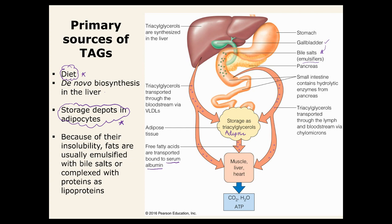Within the small intestine, there are some lipases that come from the pancreas that are going to start cleaving up those triacylglycerols. And then they have to somehow get into the bloodstream, and when they get into the bloodstream, they're going to be packaged in a structure called chylomicrons, and those are lipid and protein structures.